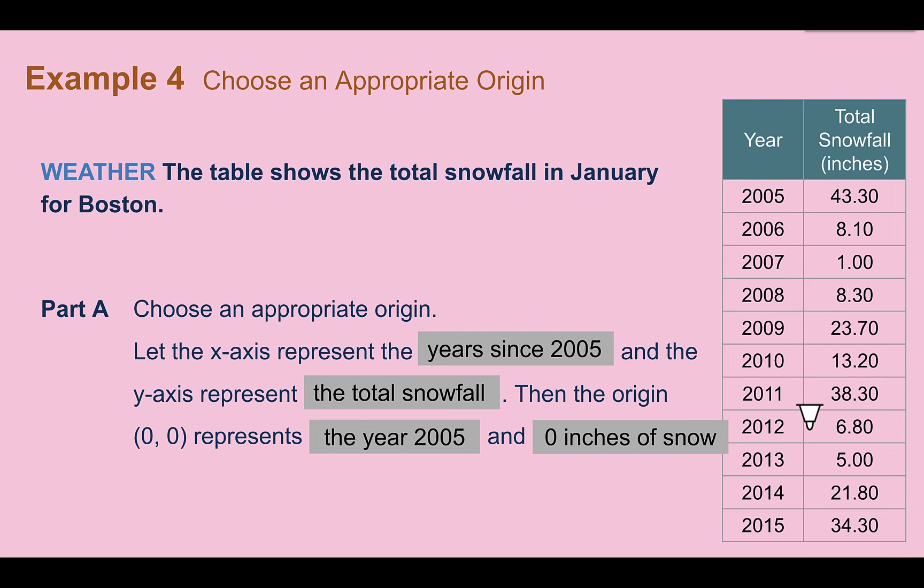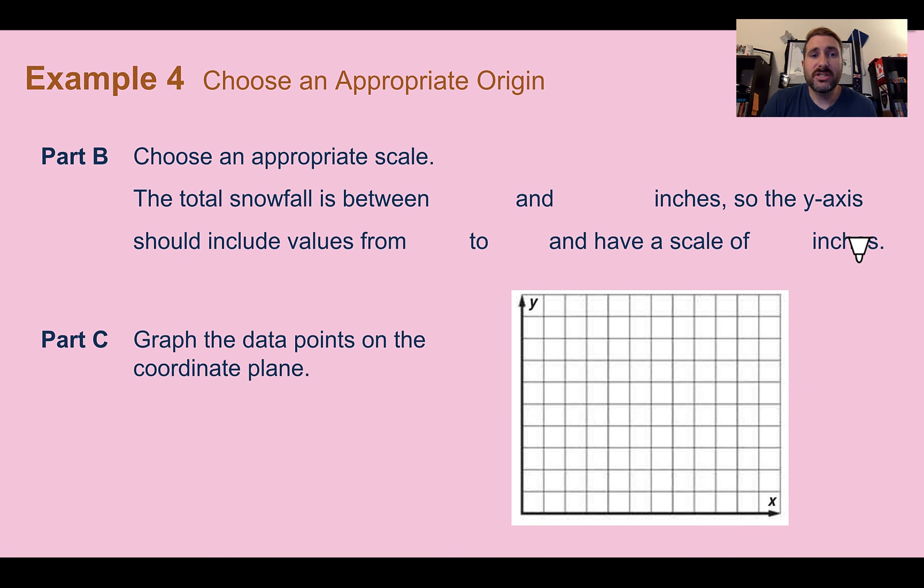So by saying that 0 on the x-axis actually represents 2005, we can skip ahead to 2005 spaces. And even if we were to count by hundreds to get there, then when we get to what we actually need for these years, they're all going to be jammed together. So we need to count by ones, but we don't actually need to start until 2005. So we're going to say that the origin represents 2005, just so we can start there and not have to count to get there. Now choosing an appropriate scale, the snowfall was between 1 and 43.3. So we need to go from 0 to 45. The easiest way to go from 0 to 45, we don't want to count by ones, let's count by 5. So each tick mark going up will represent 5 inches.